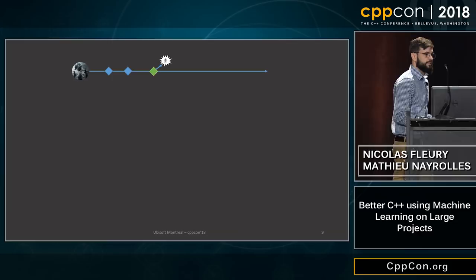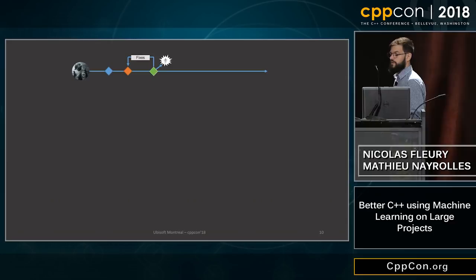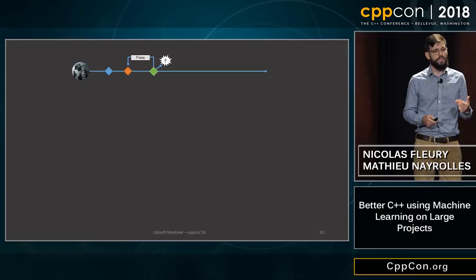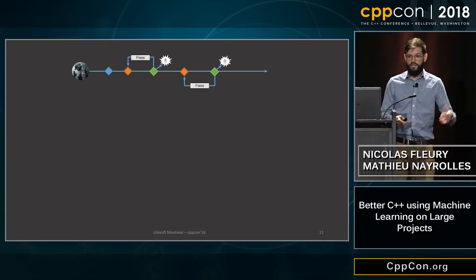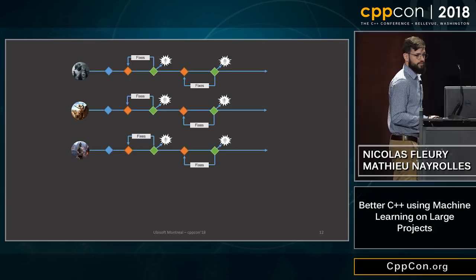From this point on, we can start learning about our practices — in the sense that we can perform blame operations on that fixed commit to determine which commit introduced the bug in the first place. This bug-fix pattern occurs again and again in a project, and if you're working in a big company like Ubisoft, it also occurs across many projects going on at the same time.